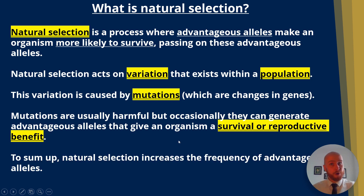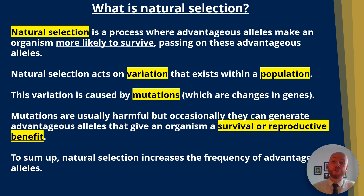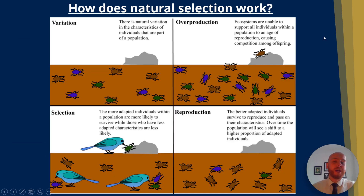To sum up, natural selection increases the frequency of certain alleles in a population. So how does natural selection work?